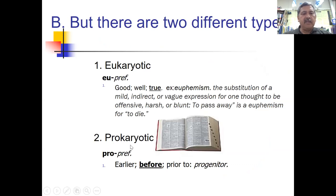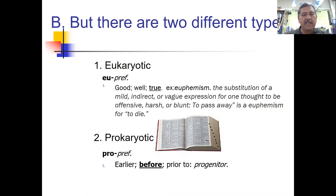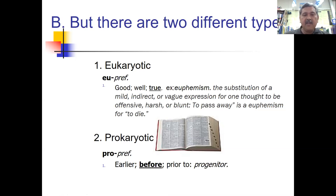Prokaryotic cells — 'pro' means before and 'karyo' means the nucleus. If we look at evolution, the prokaryotic cells came before the establishment of the nucleus. Those are bacteria, and the terms prokaryote and bacteria are used interchangeably.